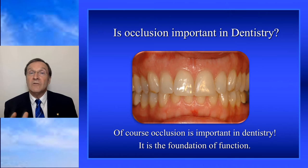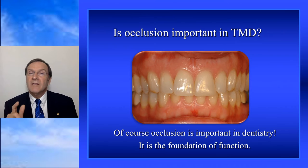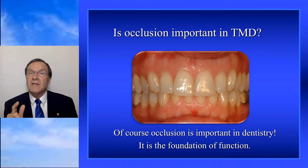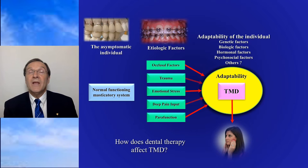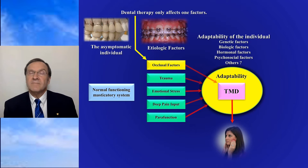Is occlusion important in dentistry? Absolutely. It's important to develop a sound masticatory system that will function over 80 to 90 years of the patient's life. And is occlusion important in TM disorders? I'll share with you etiological factors that produce TM disorders. Some relate to occlusion, and if occlusion is a major etiological factor and you improve it, that patient will get well — and many of you have experienced that.